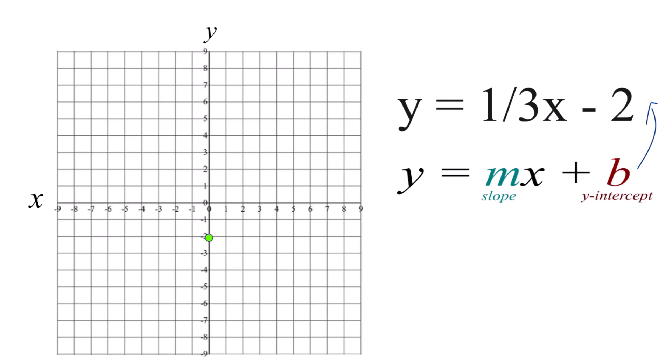Now m, that's the slope, and you can think about it as rise over run. So we have 1 over 3, rise over run. We go to our y-intercept. We go up 1 and over 1, 2, 3. That's our second point.